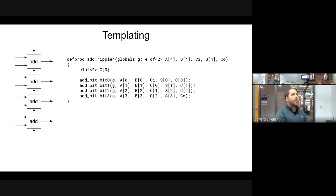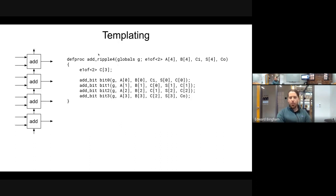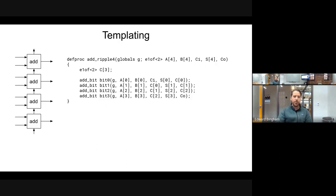Templating in ACT looks pretty much identical to templating in C, except that loops and conditionals look more like CHP. If we have a ripple carry adder defined — a four-bit ripple carry with E-one-of-two — we have an array of four E-one-of-twos for A, an array of four for B, our carry-in, output S, and carry-out. Then we have three internal carry channels: C0, C1, and C2. This hooks everything up without templating — just raw placement.